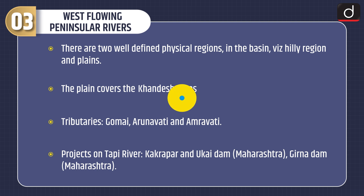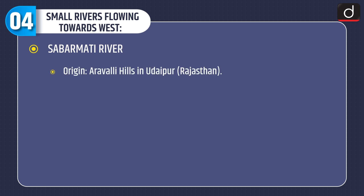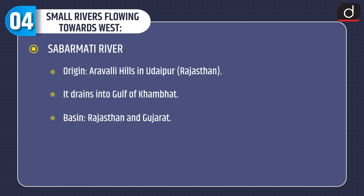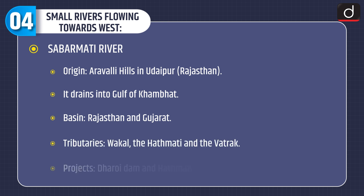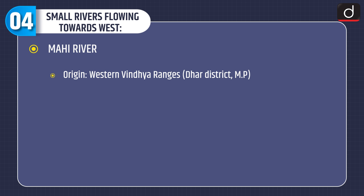Now moving on to small rivers flowing towards west. Sabarmati river: Origin in the Aravalli Hills in Udaipur, Rajasthan. It drains into the Gulf of Khambhat. Basin: Rajasthan and Gujarat. Tributaries: Vakal, Hatmati and Watrak. Projects: Dharoi Dam and Hatmati Reservoir.